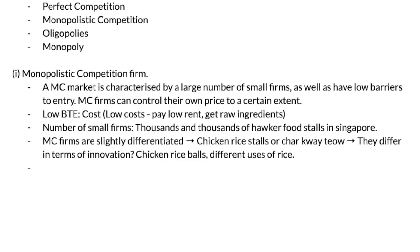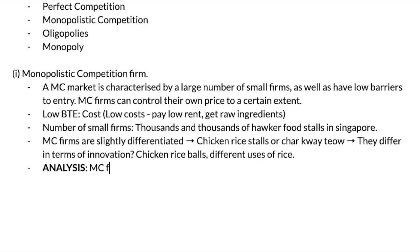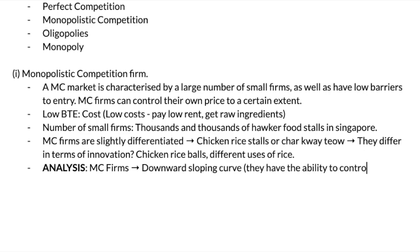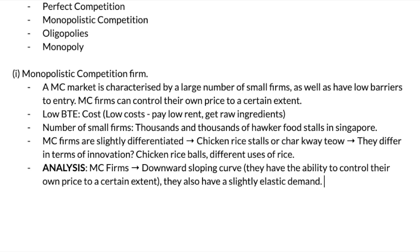The last thing you need to touch on is always to bring in your analysis. Analysis usually refers to economic analysis — things like demand, PED, PES — anything that shows analysis in an economics lens. For MC firms, one form of analysis is that they still face a downward sloping demand curve, because they have the ability to control their own price to a certain extent. They also have a slightly elastic demand, which means they can raise their own prices, but usually only by a very small extent — because if they raise it too high, consumers will just go to another store to get the same chicken rice.